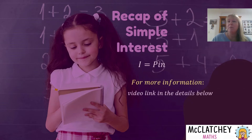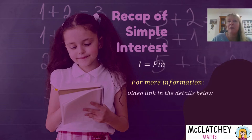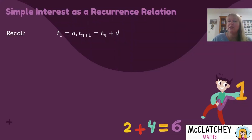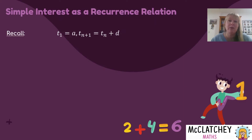For more information on using I equals PIN in different forms, rearranging the formula, and finding different variables, go and watch the other video first and then come back here. You would recall from our previous video on the introduction to arithmetic sequences that the basic form of a recurrence relation is: the first term equals a, and the nth term plus the common difference equals the n plus one term.